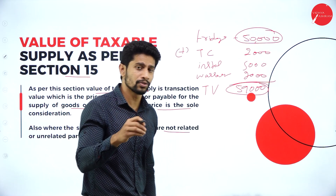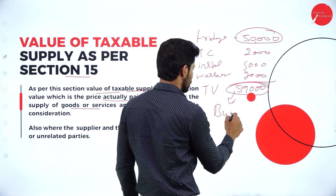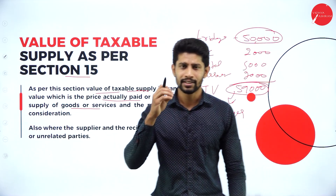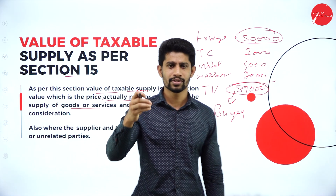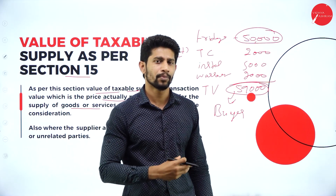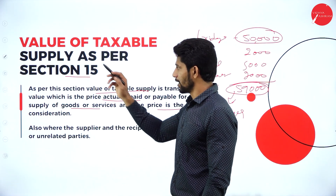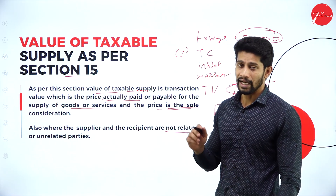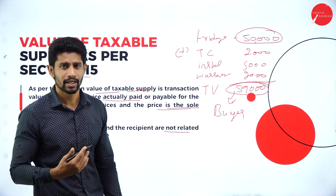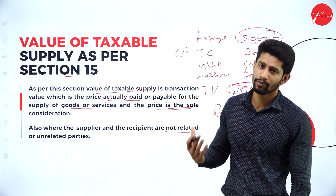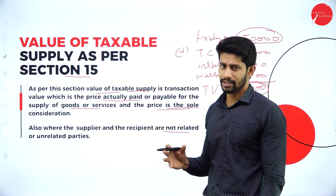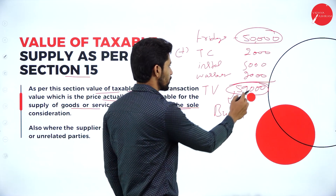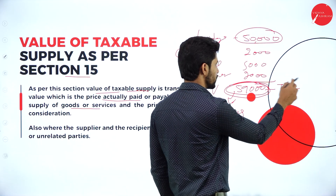Transaction value is the amount paid or payable by the particular buyer or recipient of the goods or services. It includes the additional expenditure incurred along with the purchase of a particular product or services. For this to be the taxable value of supply, the price must be the sole consideration and the buyer and seller must not be related parties. On this value — 59,000 — we will be charging the tax.